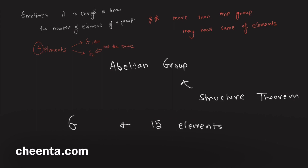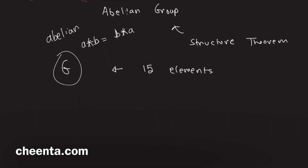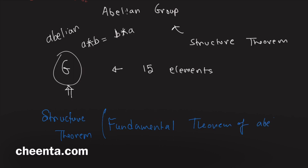We have this group G with 15 elements and we also have one more piece of information: that G is abelian. That means if A and B are two elements of the group, then A★B = B★A — the binary operation is commutative. Now the question is: what can we say about G? Here comes the structure theorem, which is sometimes known as the Fundamental Theorem of Abelian Groups.